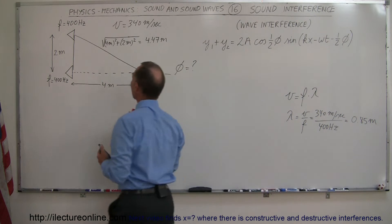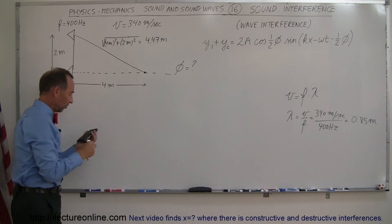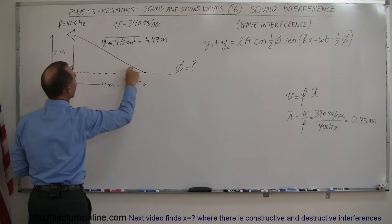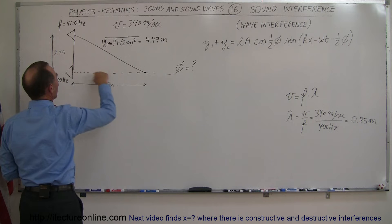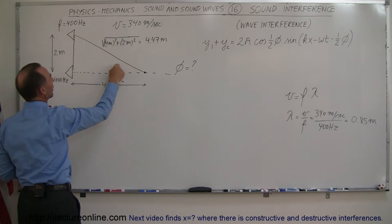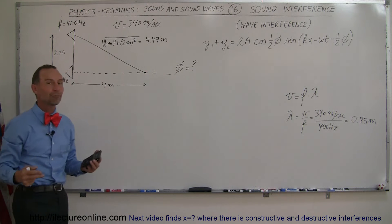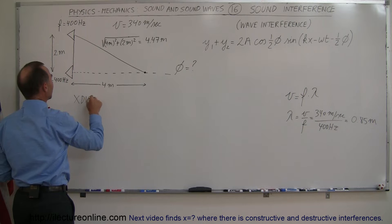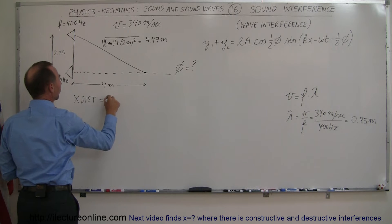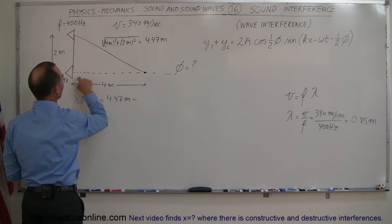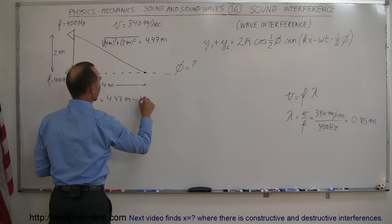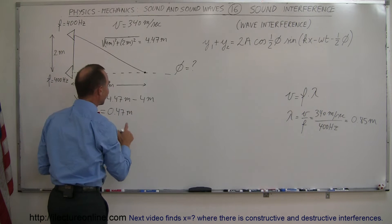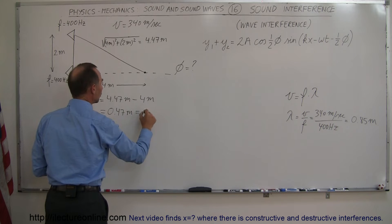Now let's figure out what the extra travel distance is — the extra distance that sound waves from one oscillator have to travel compared to the other. We have a triangle: two meters on one side and four meters on the other. The hypotenuse, calculated using the Pythagorean theorem, is 4.47 meters. So the extra distance traveled is 4.47 minus 4.00 meters, which equals 0.47 meters. That is the path length difference, phi.